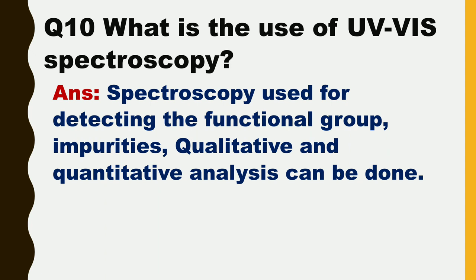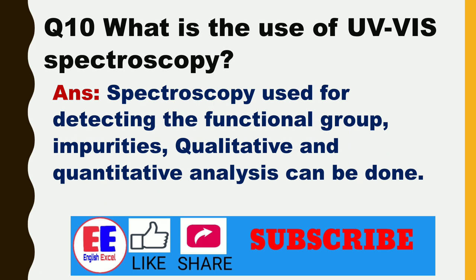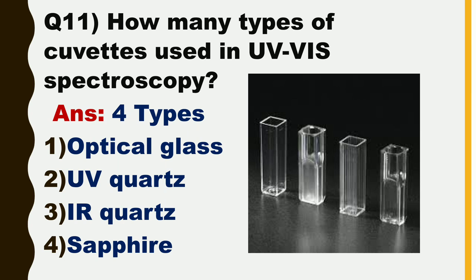Next question is: what is the use of UV visible spectroscopy? The answer is, spectroscopy is used for detecting functional groups and impurities. Qualitative and quantitative analysis can also be done.